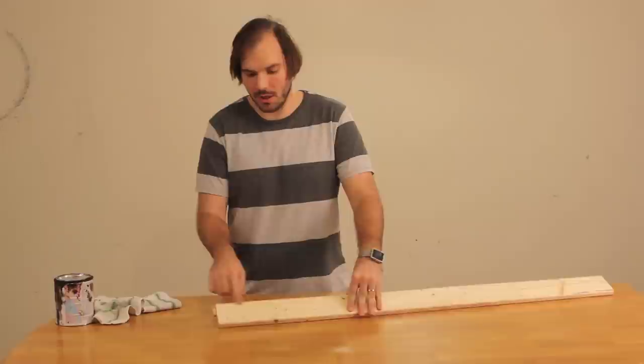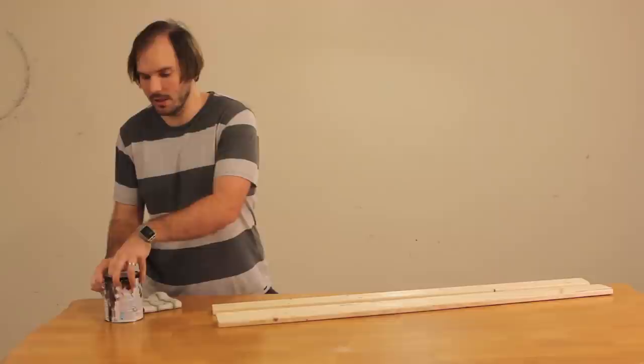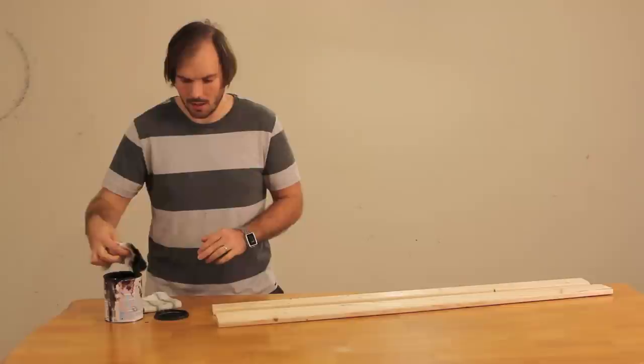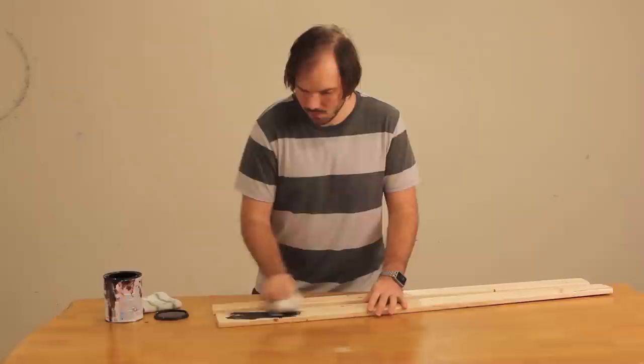Now that the wood is distressed, I have two examples here, one that we've been working on and one that hasn't been touched, and I'll apply this Rust-Oleum Kona wood stain to it. First, just with the rag, let it soak in both of them, and then I'll wipe it off with a clean rag.